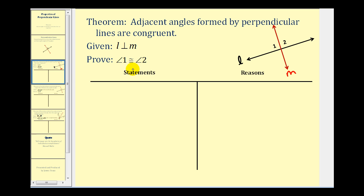Remember, if angles are congruent, their measures must be equal. And this is a pretty straightforward proof.